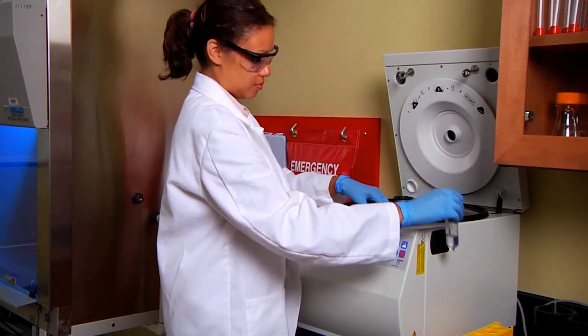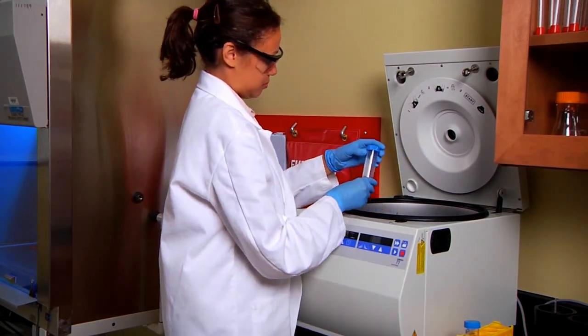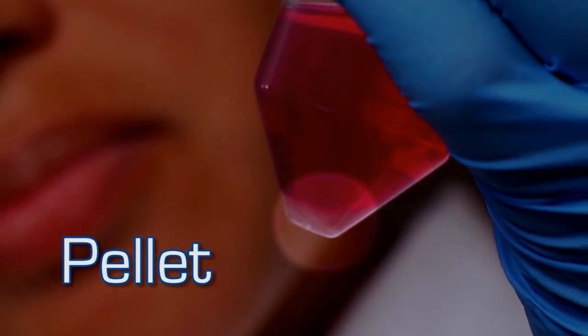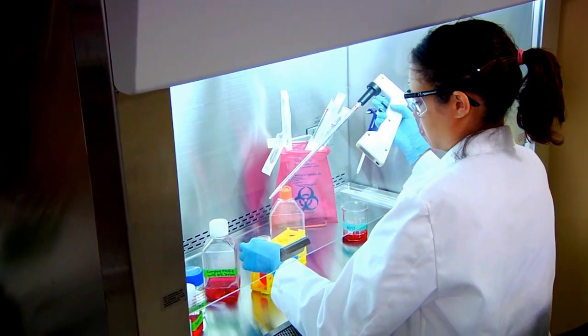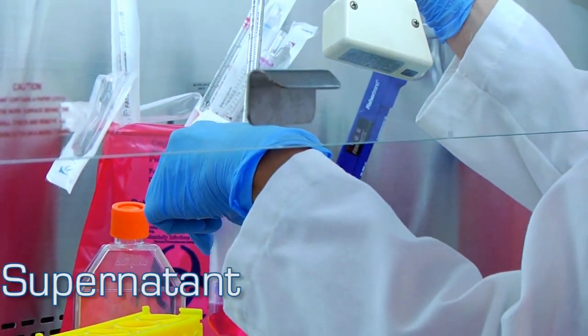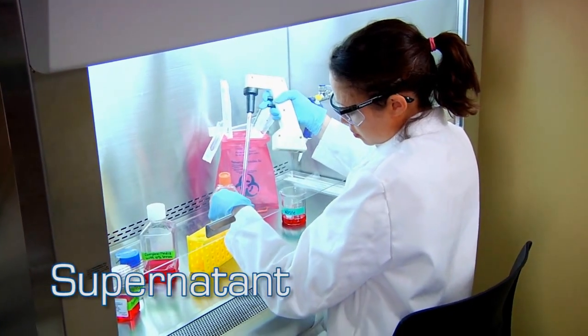Once the cells have finished spinning, look for a pellet at the bottom of the tube. Hold the tube steady, because shaking the tube can displace the pellet. Use a pipette to carefully remove the supernatant, which is the liquid above the pellet.